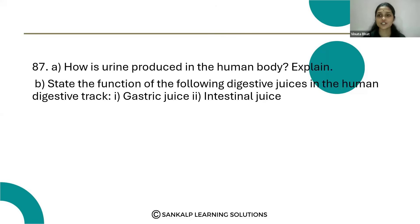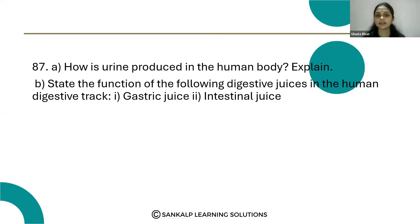Hello everyone. Let's see question number 87. How is urine produced in the human body? Explain. State the function of the following digestive juices in the human digestive tract, that is gastric juice and the intestinal juice.